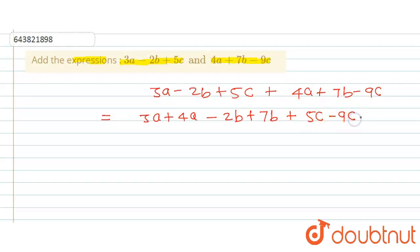you can see that if we take out the common a, this can be written as 3 plus 4. And here we will take out the common minus b, so here we will get 2 minus 7. And here we will get plus c - we will take out the common - so 5 minus 9.